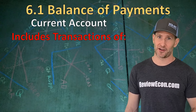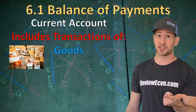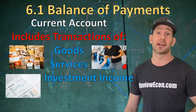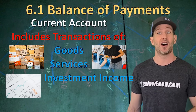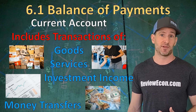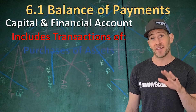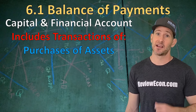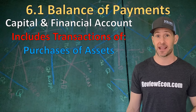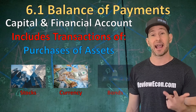Let's go over the transactions that are included in the current account. First of all, we have the purchases of goods between countries, the purchases of services between countries, also investment income — that is money earned on investments from other countries. We also have net transfers, that's when people in other countries transfer money to people in our country or vice versa. The capital account, on the other hand, counts purchases of assets between countries. These could be physical assets or financial assets, which is the focus of the AP Economics exam. Those include stocks, currency, and bonds.